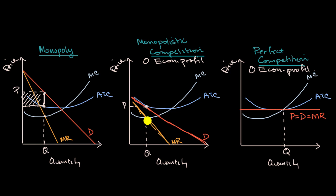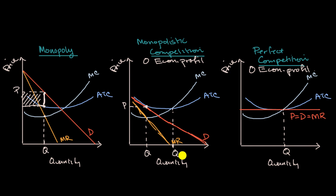This is a situation where you have deadweight loss — it is not allocatively efficient, as you're not producing at a level where marginal cost equals demand. It's also not productively efficient; to be productively efficient you'd be producing at the minimum point of the average total cost curve. This difference represents the quantity for efficient scale, and this distance can be viewed as excess capacity.